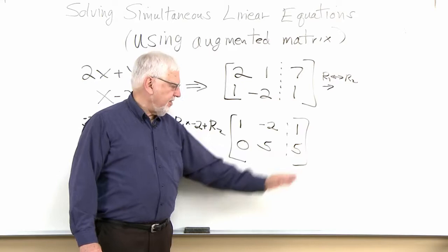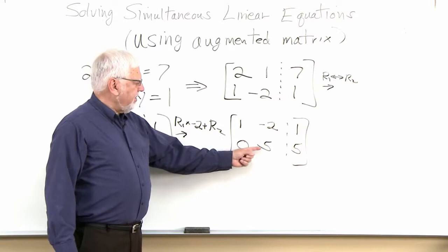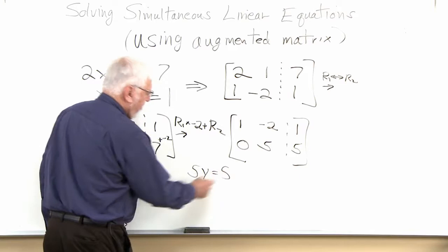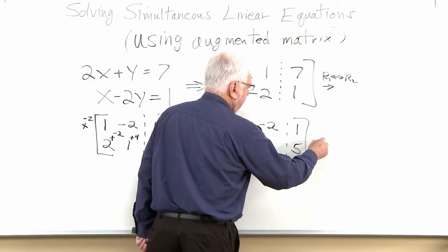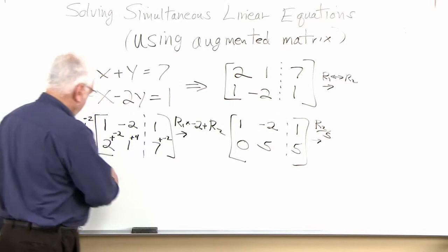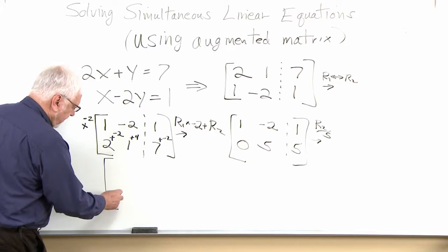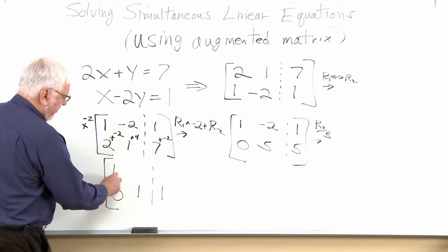Now I need to make that 5 in the second row a 1. Just like solving 5y equals 5, I divide by 5. So the instructions are: take row two and divide it by 5. Row two becomes 0, 1, 1. Row one stays unchanged as 1, negative 2, 1. Now I have a 1 in the lower right. I need to make that negative 2 in row one a zero.